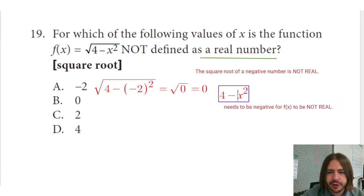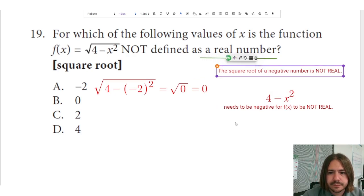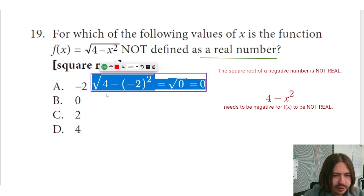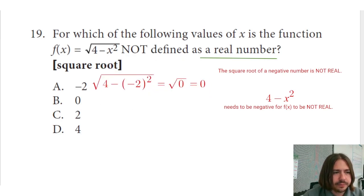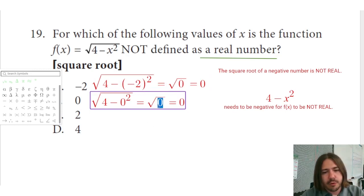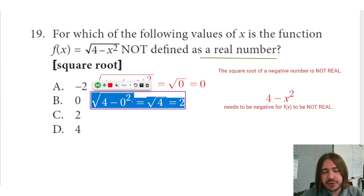I'm going to move this over a little bit here for you. Get too crowded in here. Okay, so yeah, so there we go. B, if we plug in zero, see what happens. So I'm just going to take all this and copy and paste this here. I plug in zero instead of negative two. Well, zero squared is just zero and four minus zero is four. And the square root of four is two. So two is a number on the number line. So that one would be real also. That's not the answer choice we're looking for here.